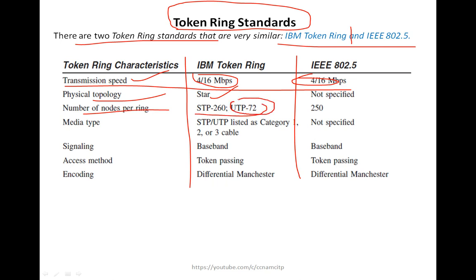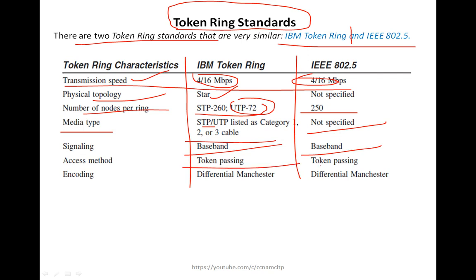Regarding media type, IBM Token Ring supports STP and UTP listed as Category 2 or 3 cable, while IEEE 802.5 has no specification. Both use baseband signaling and token passing as the access method. For encoding, both use Differential Manchester encoding. So there are several similarities between both standards, with only a few differences.